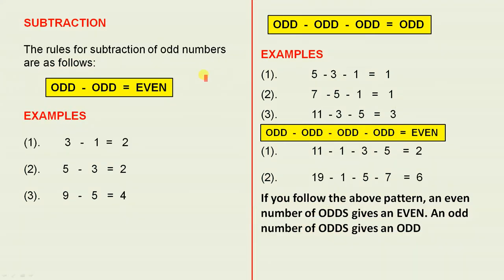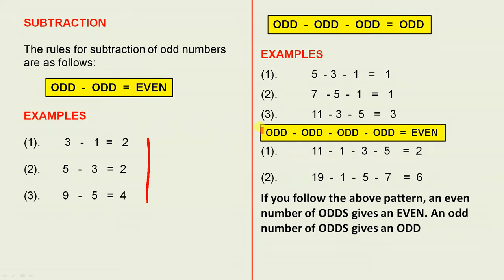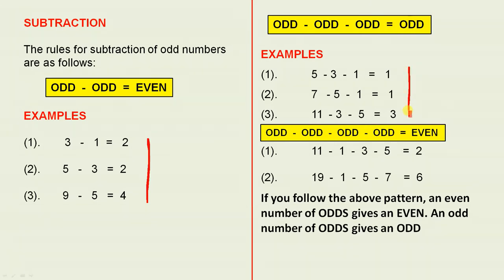Subtraction. The rules for subtraction of odd numbers are as follows. Odd minus odd equals even — have a look at those three examples. Odd minus odd minus odd equals odd, and there are three examples.